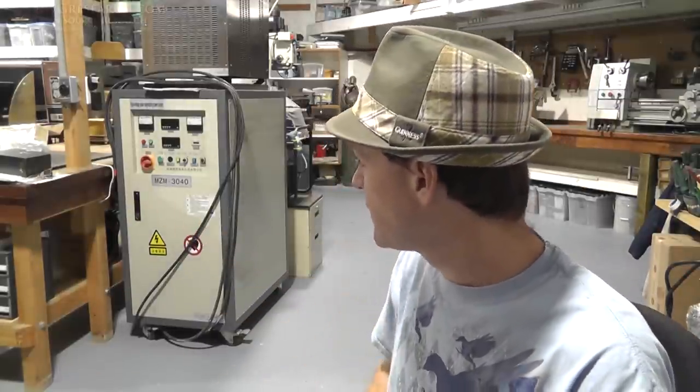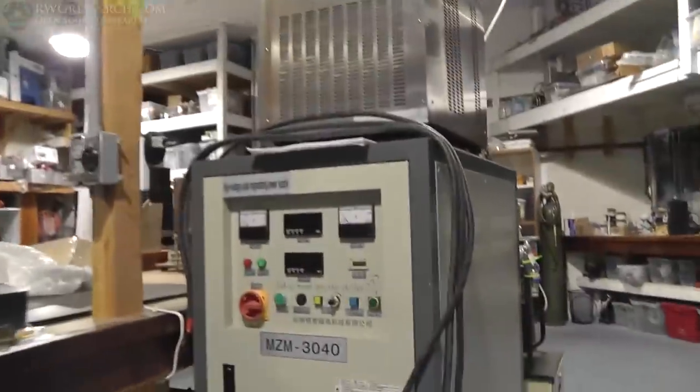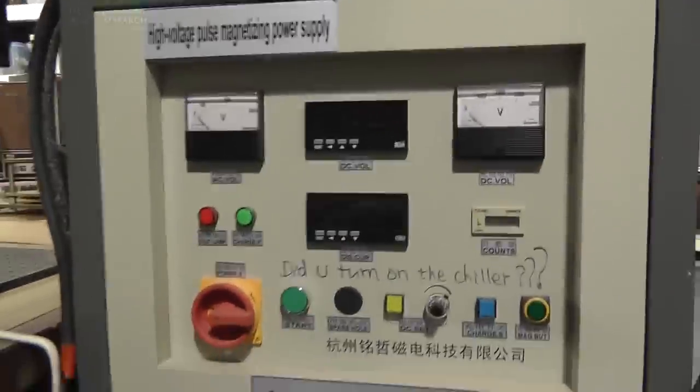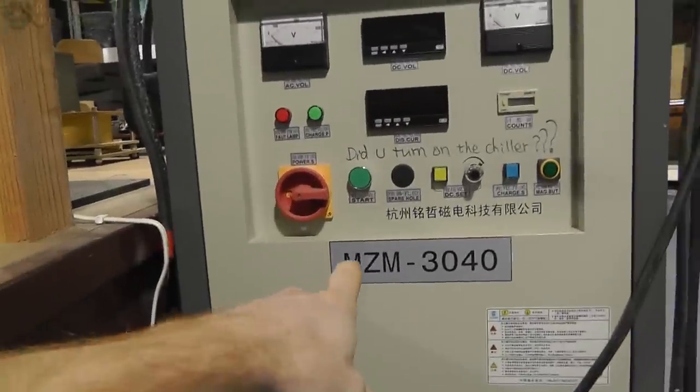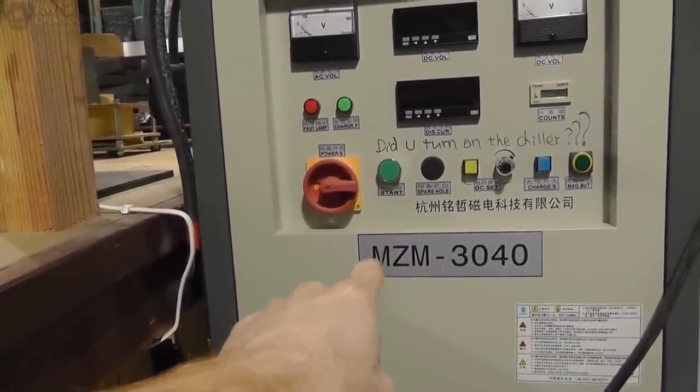Now the numbers on the front, that's an MZM 3040. All right. Now what is this? What does this mean? So that's the model brand, whatever you want to call it. It doesn't really mean a whole lot.